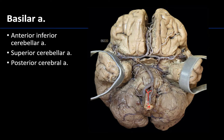Now let's move up to the basilar artery. This is formed by the coalescence of those vertebral arteries, and where they join together we get into the basilar, which I'm outlining right here. It's going to run down the midline of the pons, and the artery is named the basilar because of its close relationship to the cranial base.